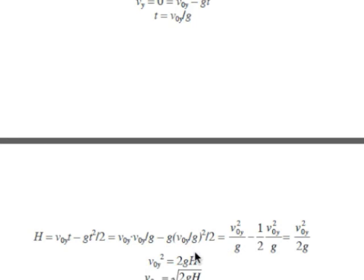That simplifies out. Here we've got two factors of v naught y, so v naught y squared over g, minus, essentially we've got one-half of v naught y squared over g. And that whole thing together just becomes one-half of v naught y squared over g.